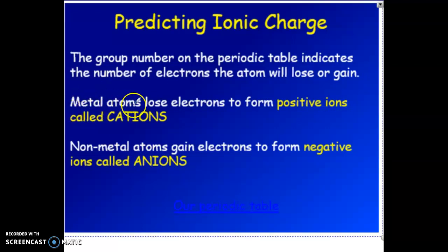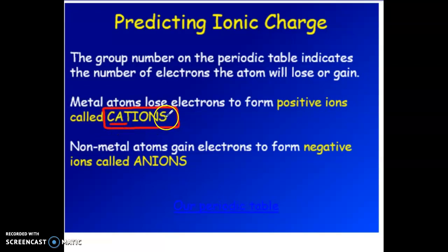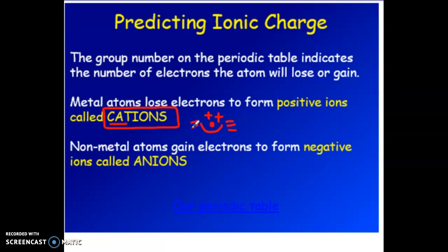When metal atoms actually become ions, they have a category name. Positive ions are called cations — that goes for anything with a positive charge, so sodium ions, magnesium ions, any metal ion is called a cation. Non-metals, because they are gaining electrons, are negative. All negative ions go under the category of being an anion.